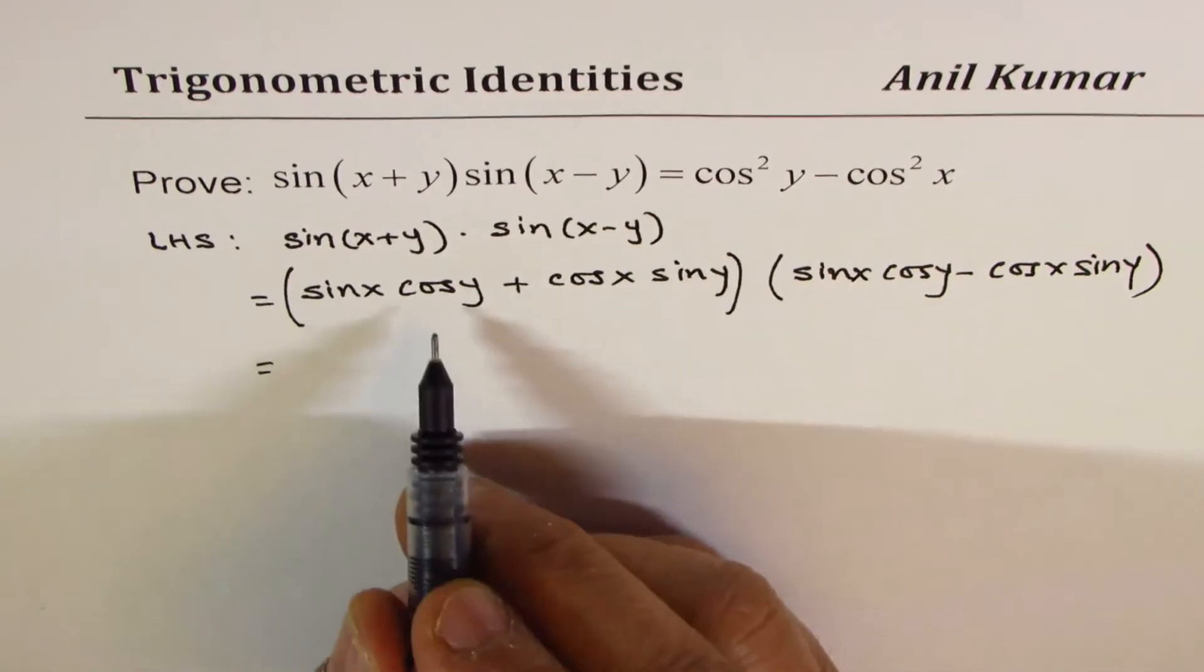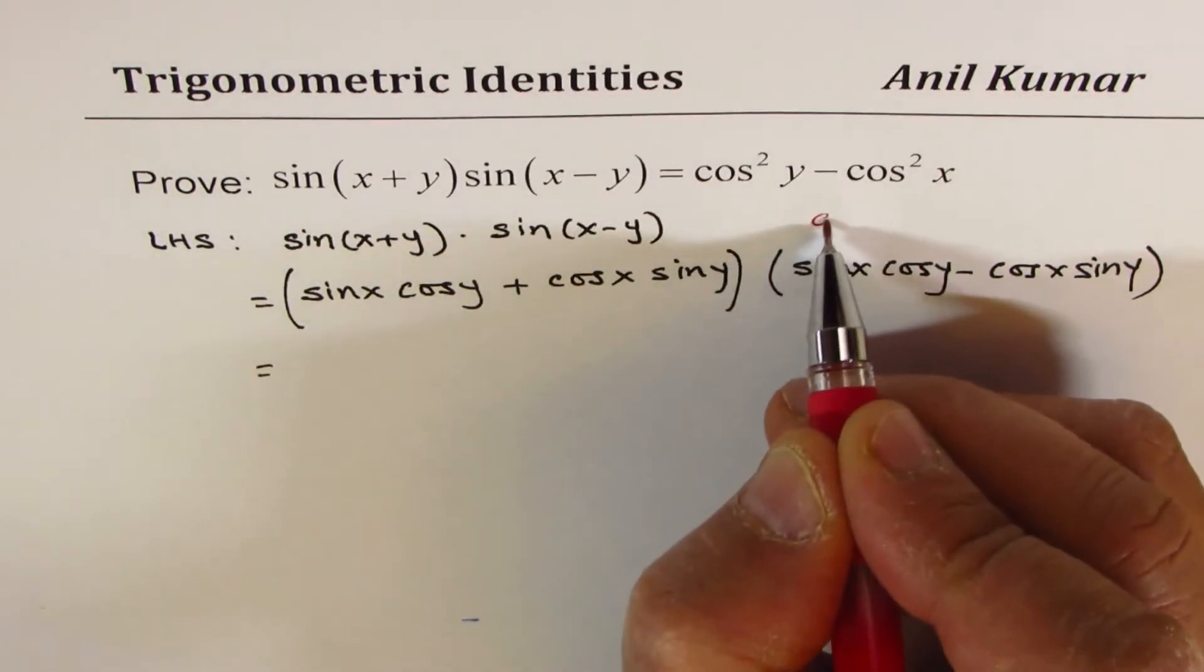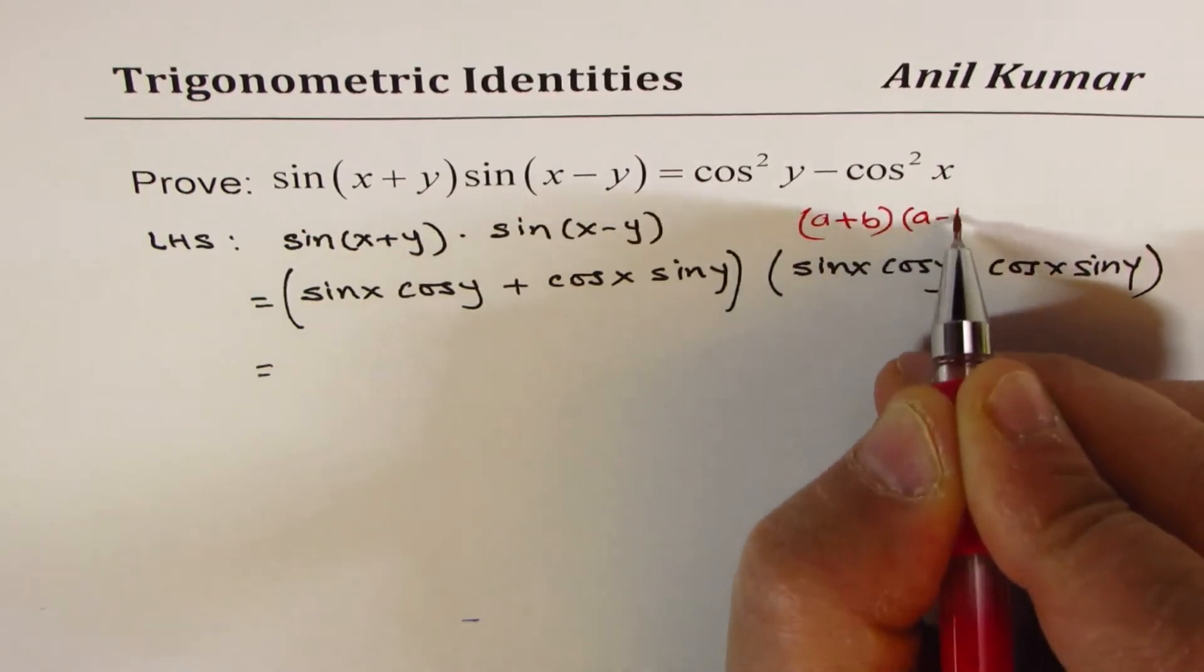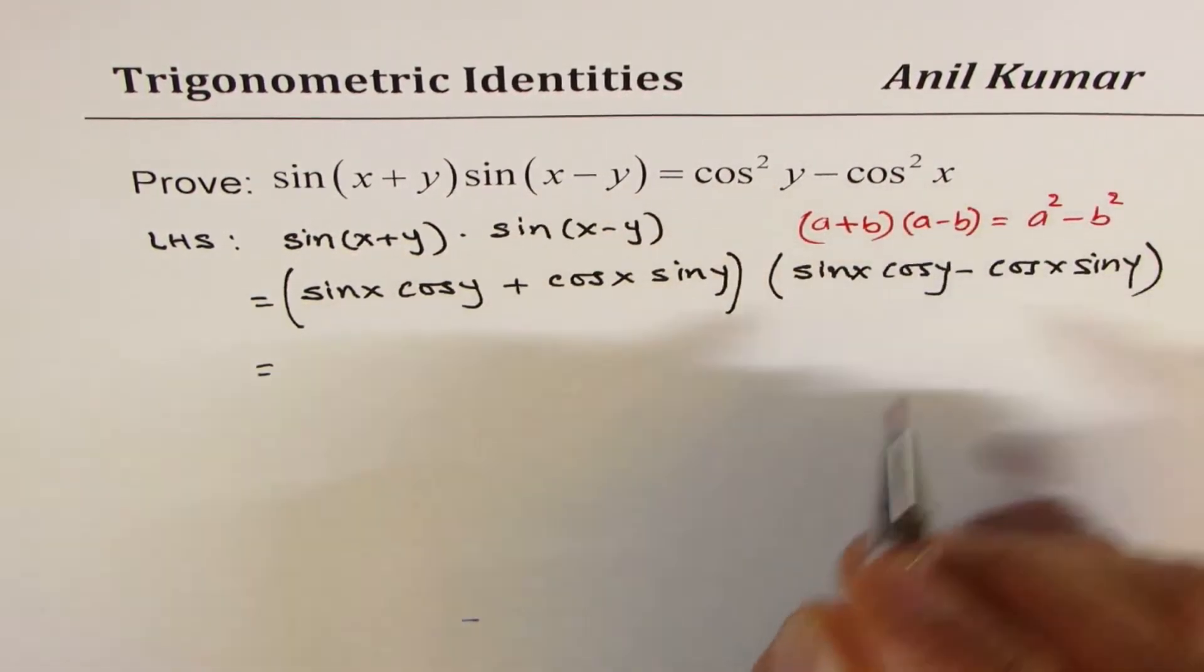Now, this is like (a + b) times (a - b). So you get a² minus b². At this stage, it's like (a + b) times (a - b), so we get a² minus b².